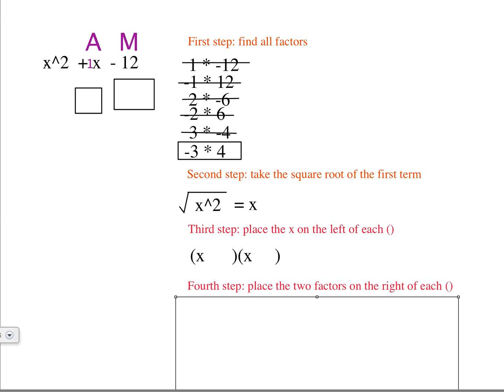And then the fourth step is to place the two factors on the right of each of them. So we're going to take those two factors that we found before, which was negative 3 and 4, and we're going to place them right here, negative 3 and positive 4.